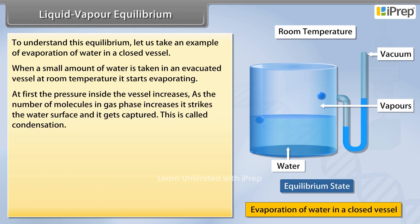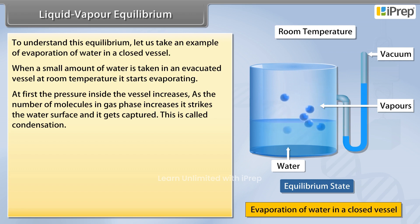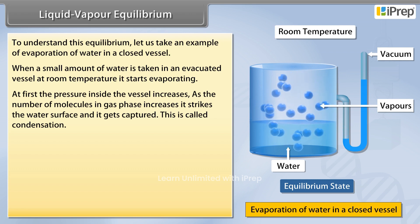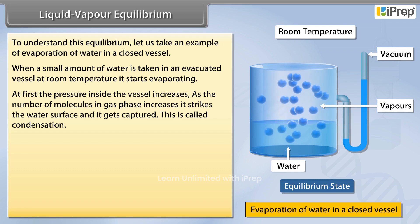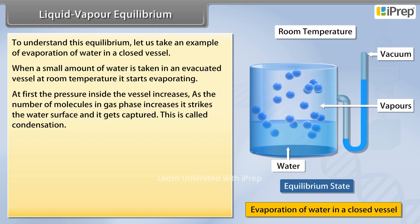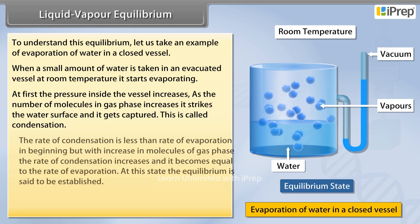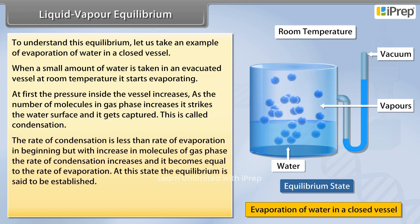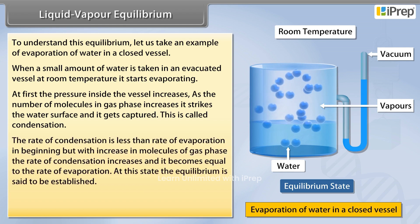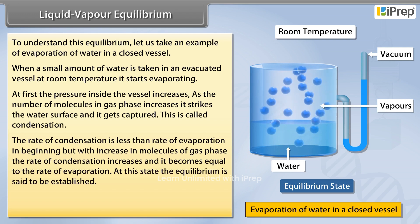At first, the pressure inside the vessel increases. As the number of molecules in the gas phase increases, they strike the water surface and get captured. This is called condensation. The rate of condensation is less than the rate of evaporation in the beginning.